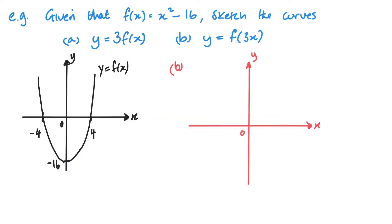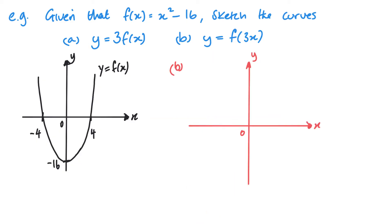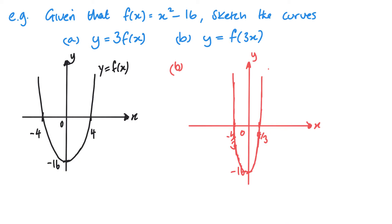Now for part b, I can see that it's inside the bracket, so I need to divide all of my x values by 3. So now I'm going to hit the value 4 thirds and negative 4 thirds. However, my y values are unchanged, so my horizontal stretch looks something like this. And that's my y equals f of 3x.